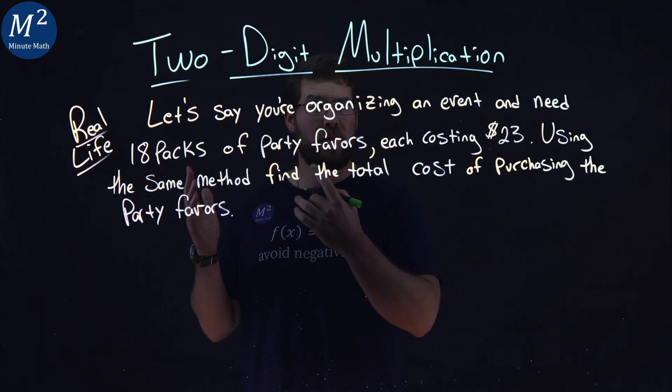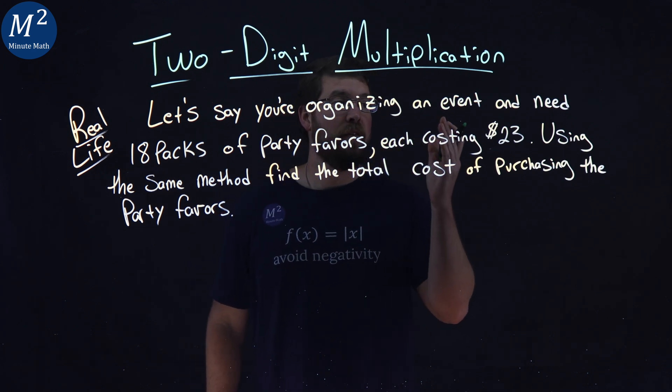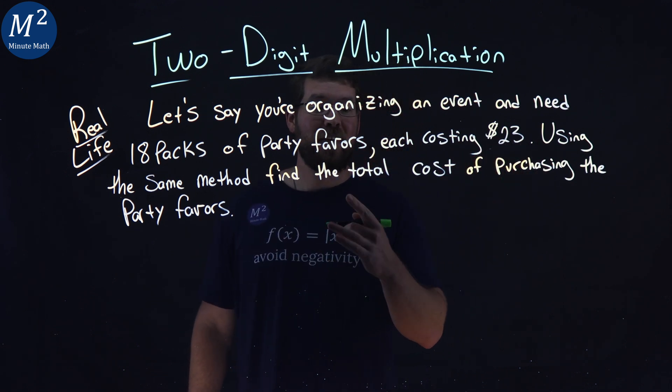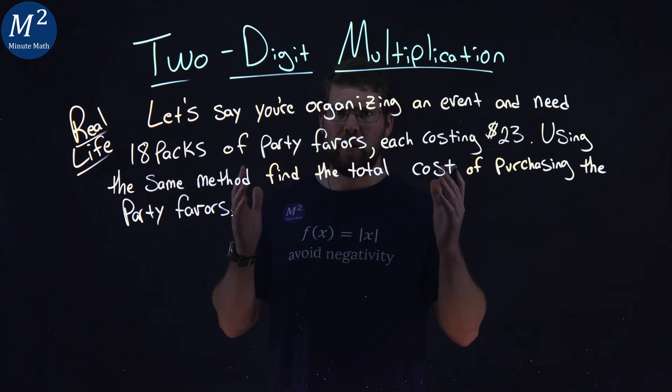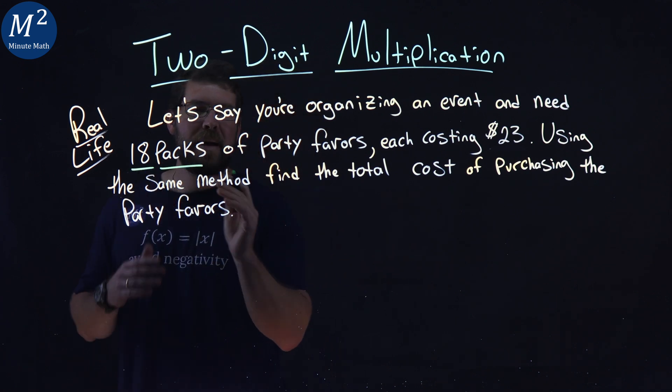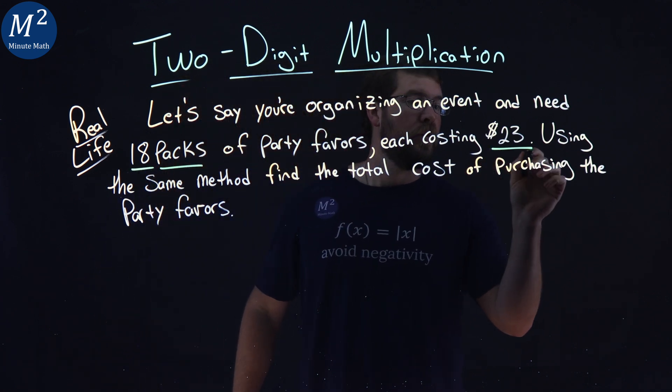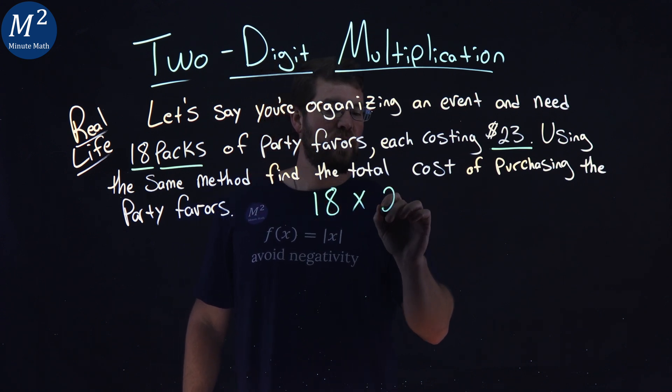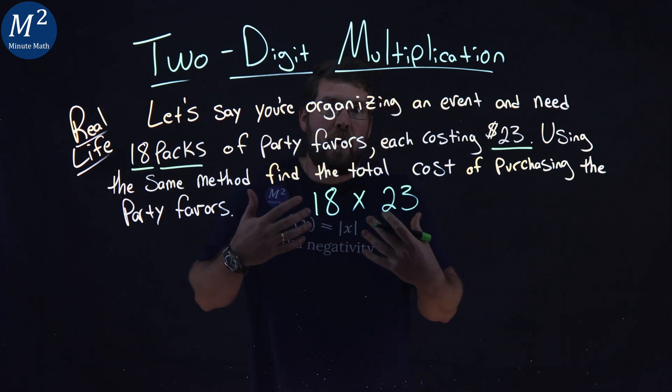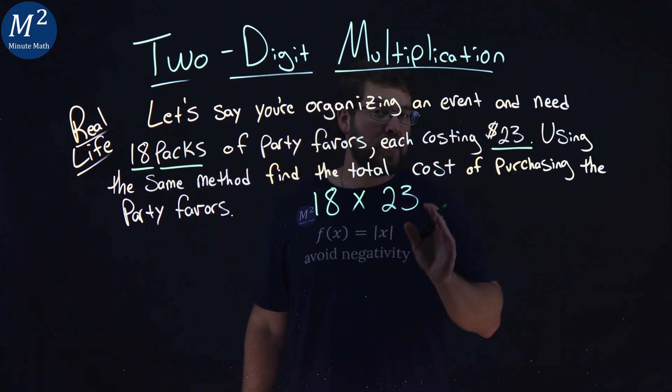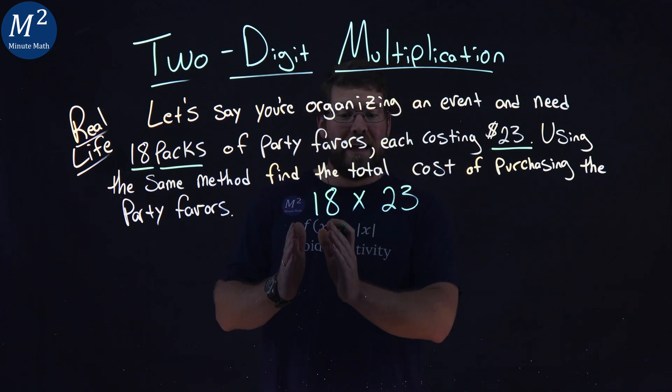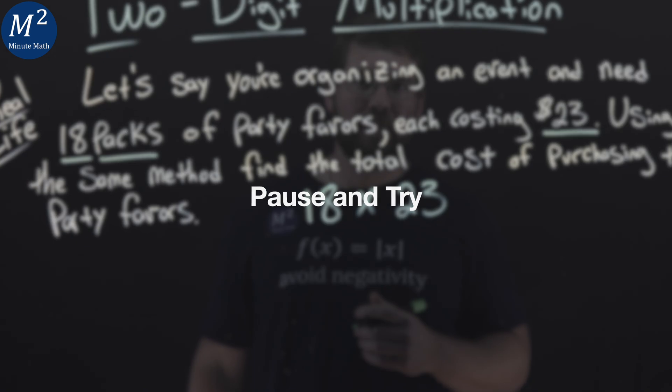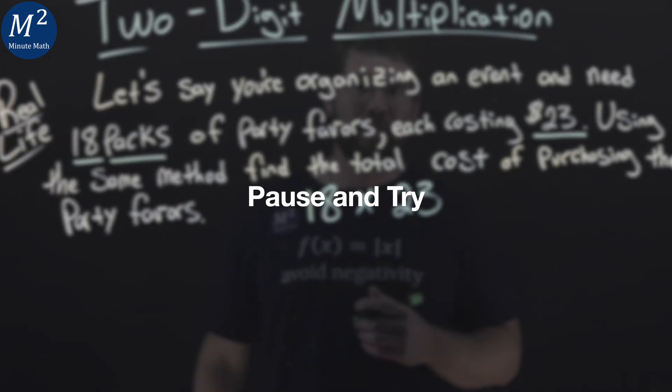Now, let's multiply two-digit numbers with a real-world example. Let's say you're organizing an event and need 18 packs of party favors, each costing $23. Using the same method, find the total cost of purchasing the party favors. All right. What are the key parts here? We have 18 packs of party favors, and each one costs $23. So, to find the total cost of the party favors, we're going to multiply this 18 by 23. And that will give us that total cost that we're looking for. So, I want you to pause this video and apply the method that we just learned in multiplying 18 times 23. And then, when you're ready, we'll go through the steps and see if they line up with your answer.